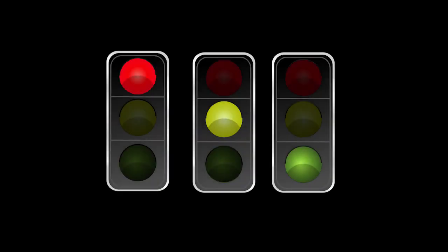Before moving towards the hardware setup, you should first know about the mechanism. In a traffic control system, the red LED indicates that the vehicle should stop, the green LED indicates that the vehicle should move, and the yellow or orange LED indicates that the vehicle should slow down or get ready to move. In our project, we have set the green LED delay to 5 seconds and the orange LED delay to 3 seconds.